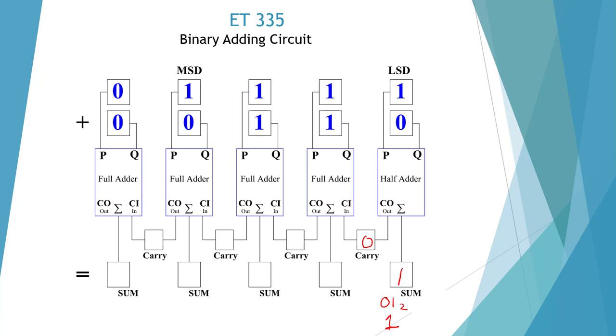Here we have P and Q. We have 1 plus 1 plus 0, which equals binary 10. So we're going to have sum of 0, carry 1, and we have 10 base 2, which is 2.